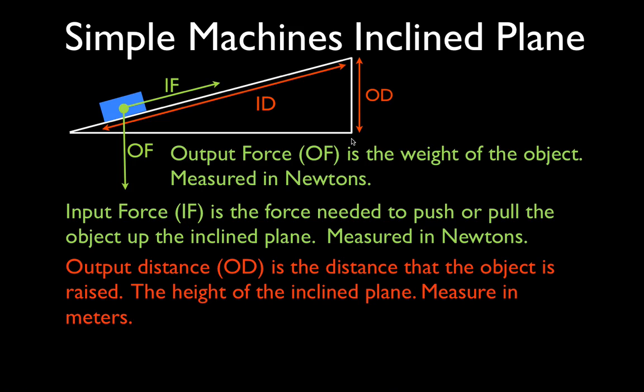It is the distance that you're hoping to get out of the machine. What do you really want to do? You want to raise the object from the ground surface to the top of the inclined plane. So the distance you want to get out of the inclined plane is the output distance, or the height of the machine, measured in the base unit of the metric system for length, which is the meter.